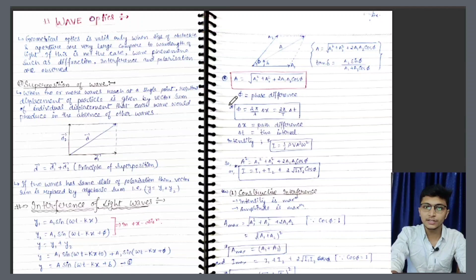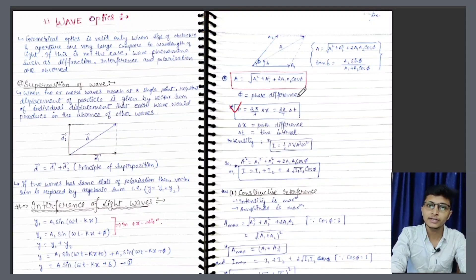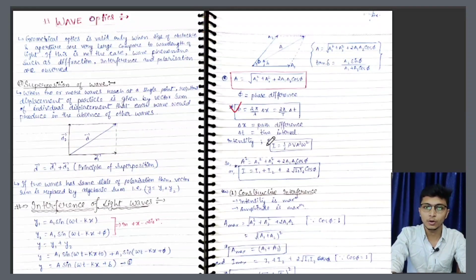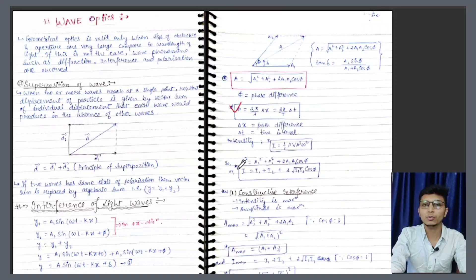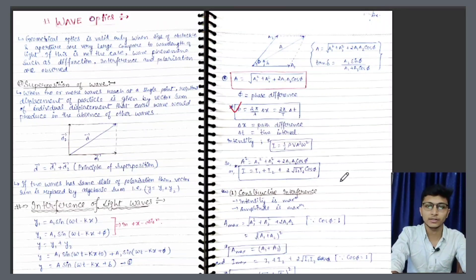Yeh jo cheez hai, bhoat important cheez hai. Yeh jo phi hai — isko aam likha jata hai: 2 pi by lambda into delta x, jahan delta x path difference hai, ya phir equal to 2 pi by T into delta t. Delta t is time interval. Aur intensity ka formula aapko as it is yaad rakhna hai: I is equal to half rho v a square omega square, yahan pe a is amplitude. Aur intensity ka agar isko solve karein, to ek formula aata hai: I1 plus I2 plus 2 under root of I1 I2 cos phi — phi yahan pe phase difference hai.